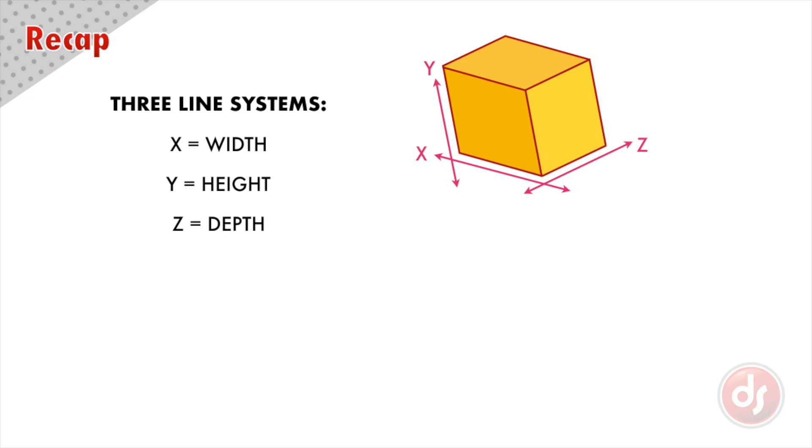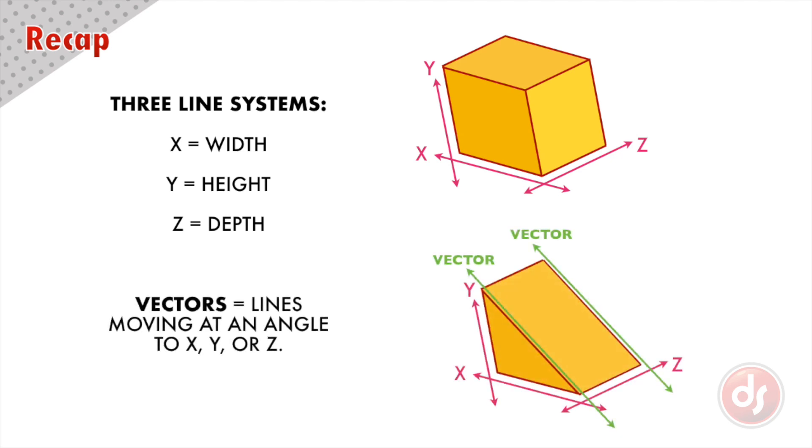So there we have them, our three line systems. X is width, Y is height, and Z is depth. And vectors, or lines that are moving at an angle to X, Y, or Z.